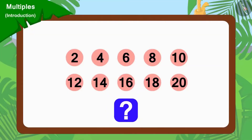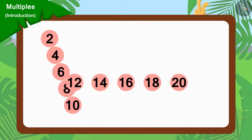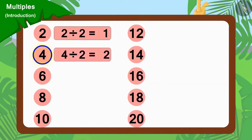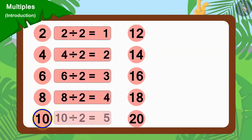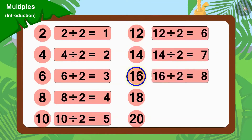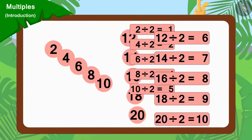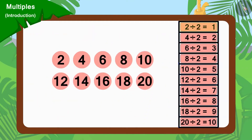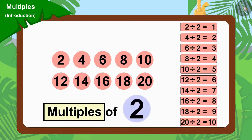Children, do you see anything special in these numbers? Yes, we can divide all these numbers by 2. Numbers that can be divided by 2 are multiples of 2. In this way, 2, 4, 6, 8, etc. are multiples of 2.